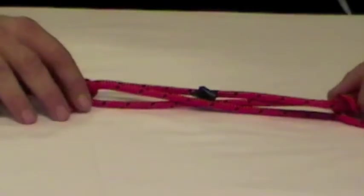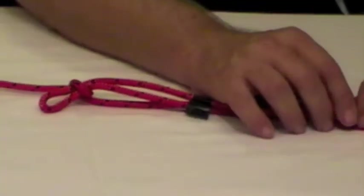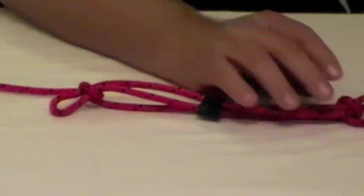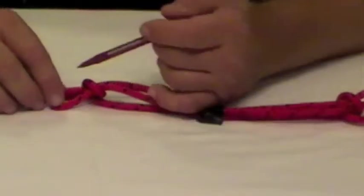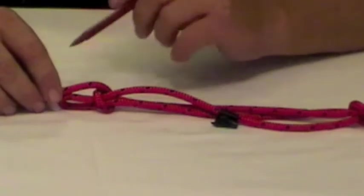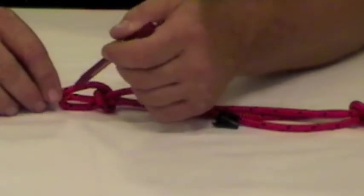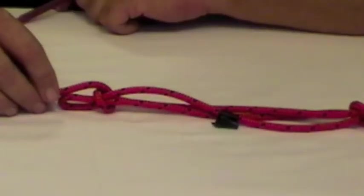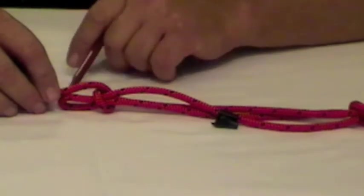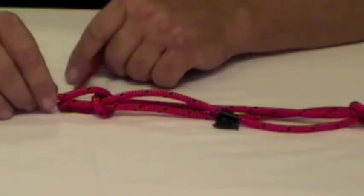Now if you're going to use it for a while it's a good idea to secure this part of the loop here to the long part there. Secure those two. You could use a cable tie or you could use some seizing or a bit of electrical tape. You can make that loop as big as you want obviously.